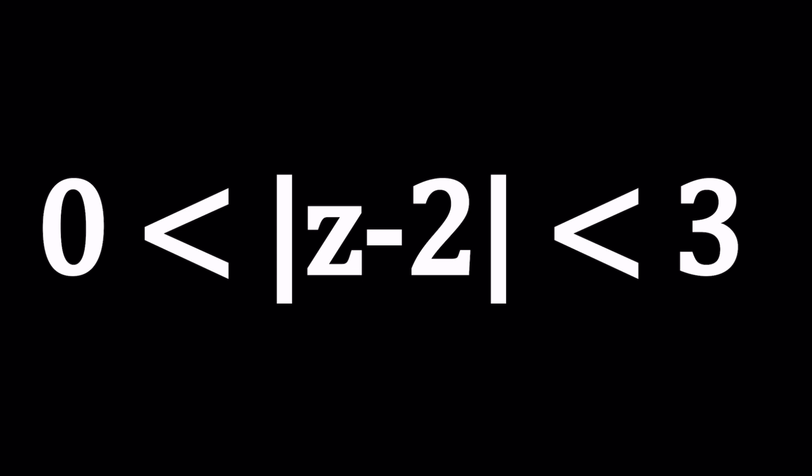What does that mean? We are given this inequality, the absolute value of z minus 2 is less than 3 and greater than 0. In other words, it's between 0 and 3, and we're going to try to find the z values that satisfy this inequality.